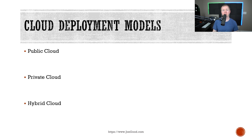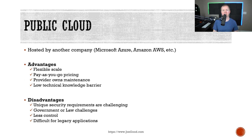There are three different cloud deployment models that you can choose from: public cloud, private cloud, and hybrid cloud. The public cloud is where you use a service provider such as Microsoft Azure or Amazon AWS, and you would put everything into the public cloud. The advantages are flexible scale — you can adjust what you need without purchasing additional equipment. You also get pay-as-you-go pricing, so there's no CapEx costs. A provider owns the maintenance and updates of the hardware, and there's a low technical barrier to entry, so you don't need a lot of technical knowledge in order to get involved with a public cloud.